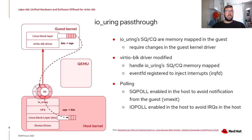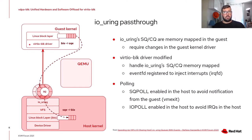A similar approach, which we presented at last year's KVM Forum, is based on IOUring — the new Linux interface between user space and kernel for asynchronous IO. The interface consists of a pair of rings, submission queue and completion queue, allocated by the kernel and shared with user space. What we tried was to map these queues directly into guest memory and modified the VirtIO block driver to use the host IOUring queues directly. We also took advantage of IOUring's polling features — enabling SQPOLL to avoid notifications from the guest, and IOPOLL to avoid interrupts from the device.